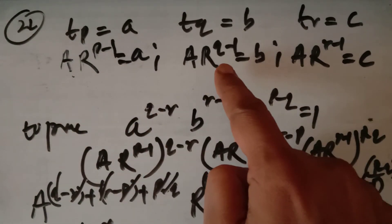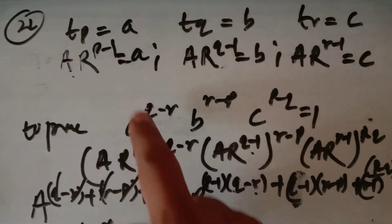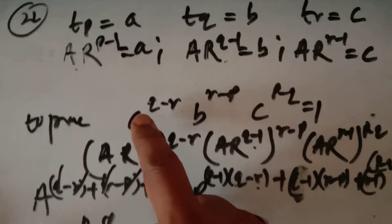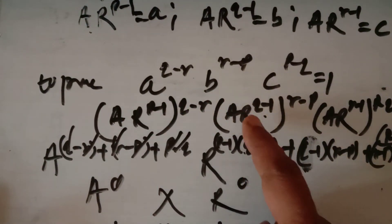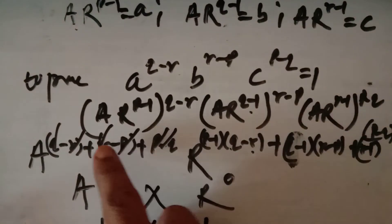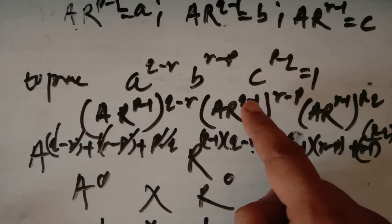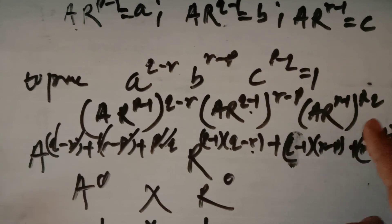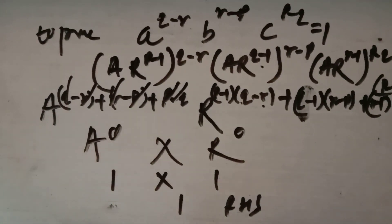To summarize: the pth term is A·R^(p-1), the qth term is A·R^(q-1), and the rth term is A·R^(r-1). Substituting these into the LHS and multiplying with the same base causes all powers to cancel, giving A^0 · R^0 = 1. We will discuss further in the next lecture. Thank you.